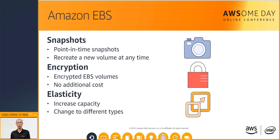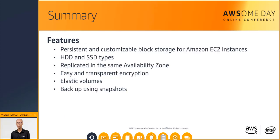When your company grows, the amount of data stored on your EBS volumes will probably also grow. EBS volumes have the ability to increase capacity and change types — meaning you can change from hard drive to SSD, or increase from a 50 GB volume to a 16 TB volume. This resizing operation can be done on the fly without having to stop the instances. In summary, we have reviewed what EBS volumes are and their various characteristics.